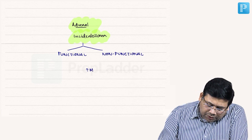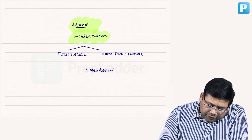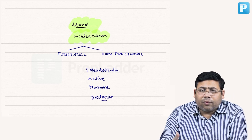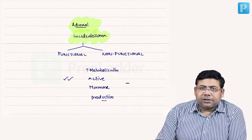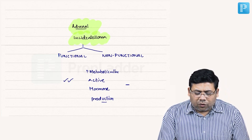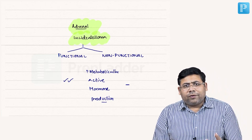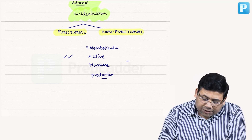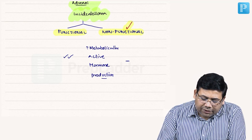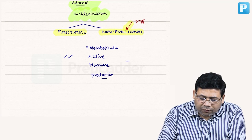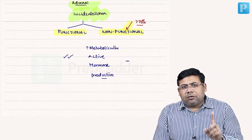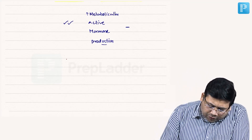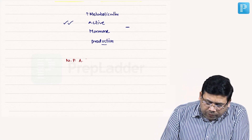A metabolically active tumor will have hormone production — that is a functional tumor. In non-functional tumors there is no hormone production. Majority of tumors like aldosteronoma and pheochromocytoma always have symptoms, but in this case the patient has no symptom. More than 70% of patients presenting with adrenal incidentaloma are non-functional tumors, like in this case where the lady has no clinical complaint pertaining to the adrenal gland.